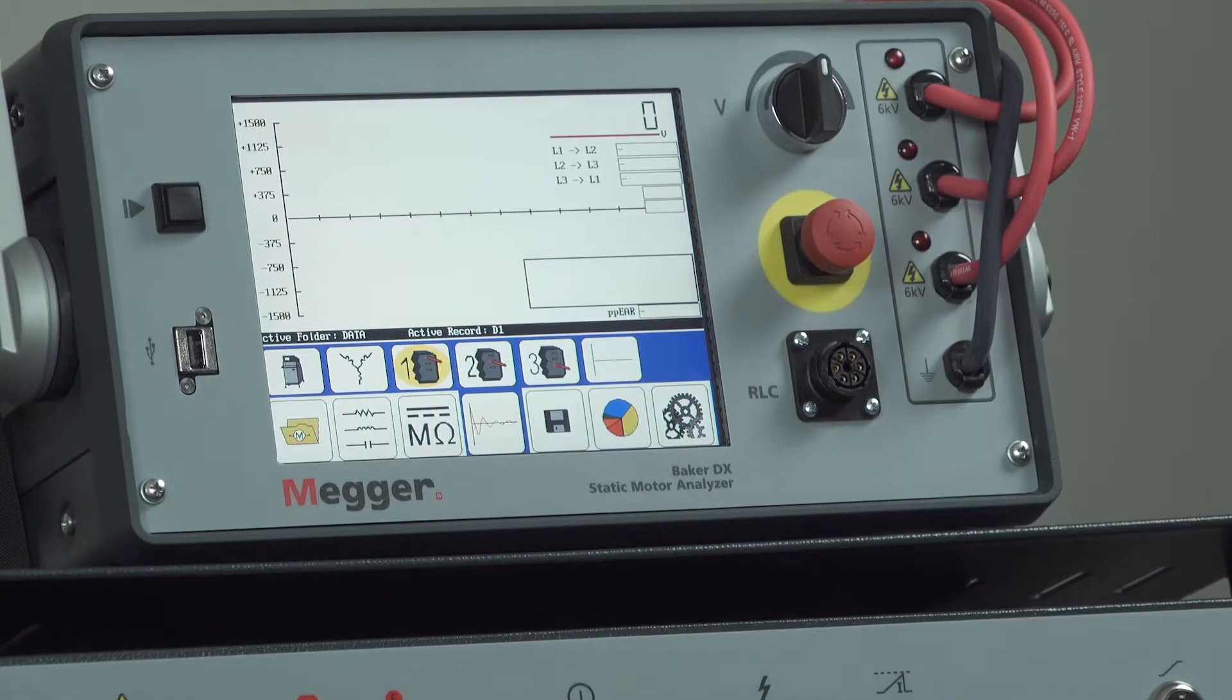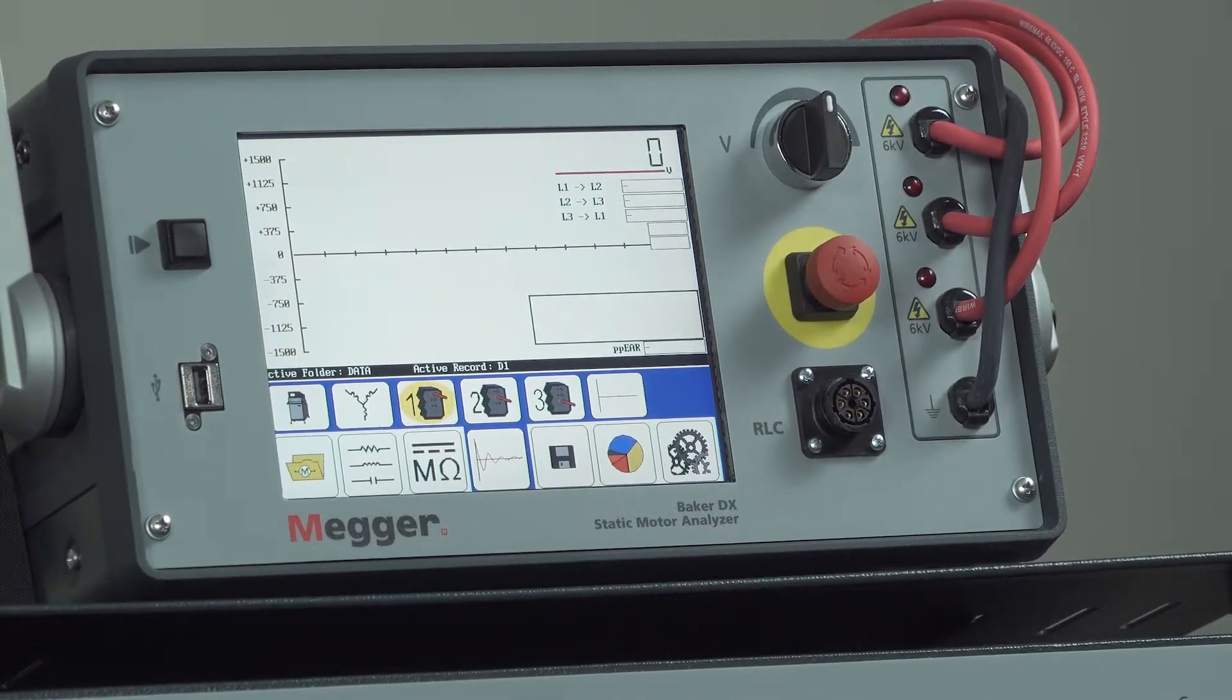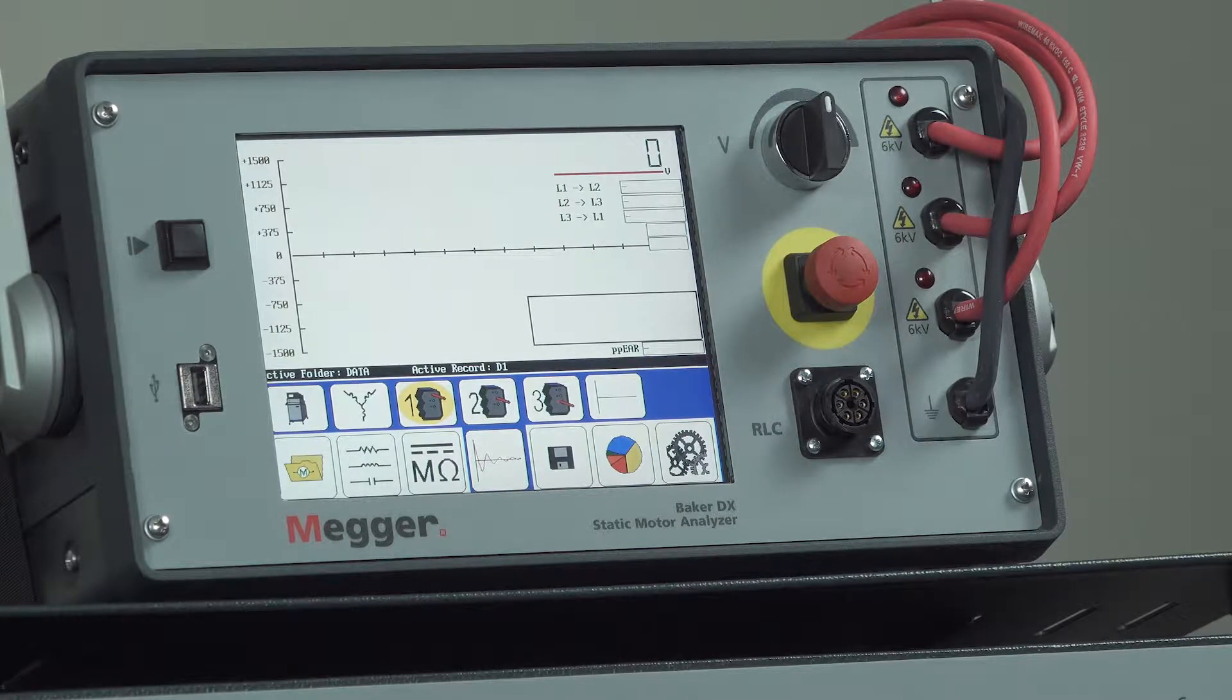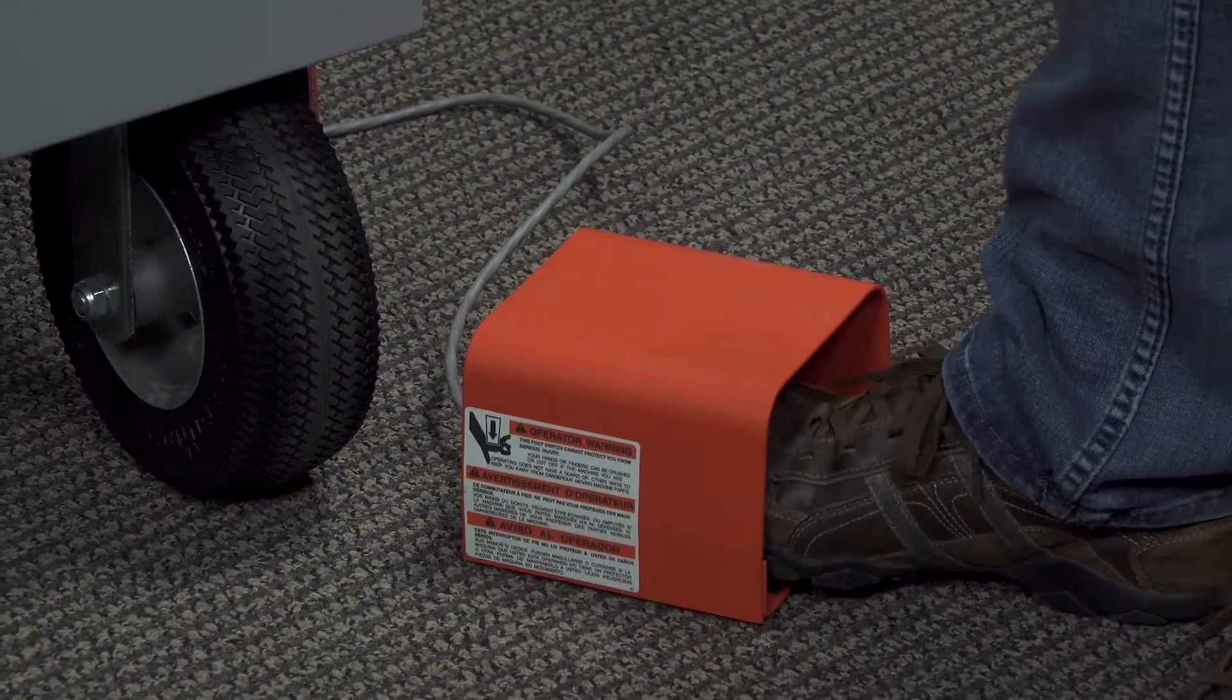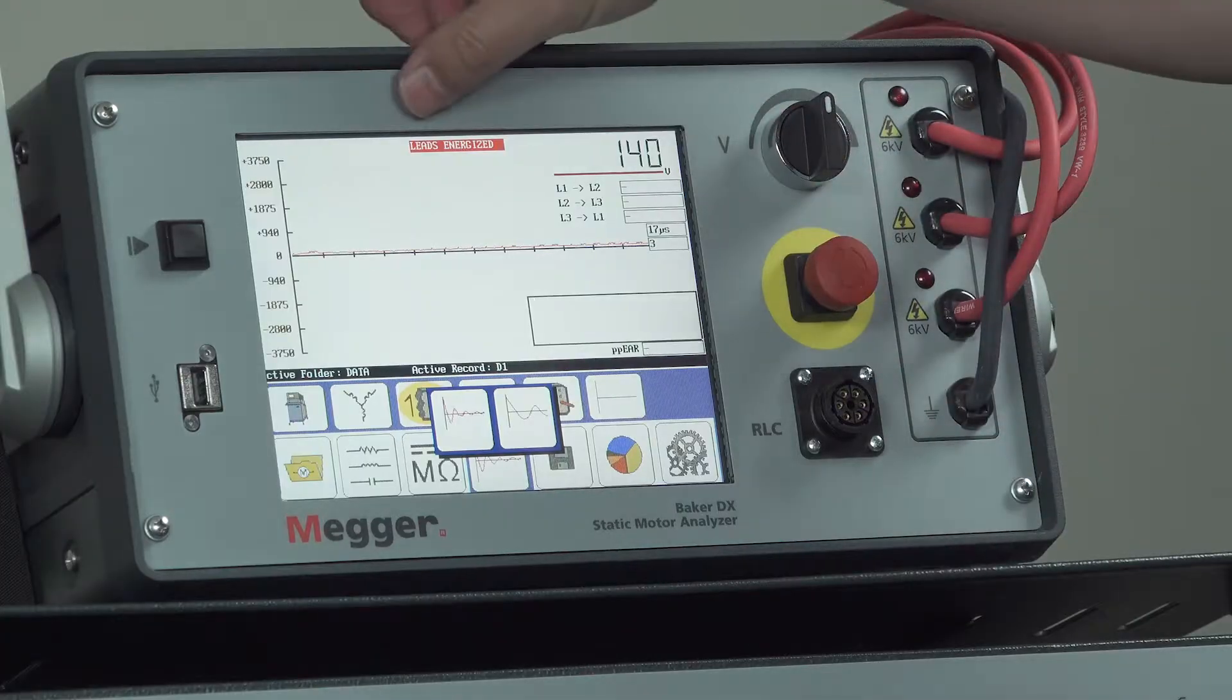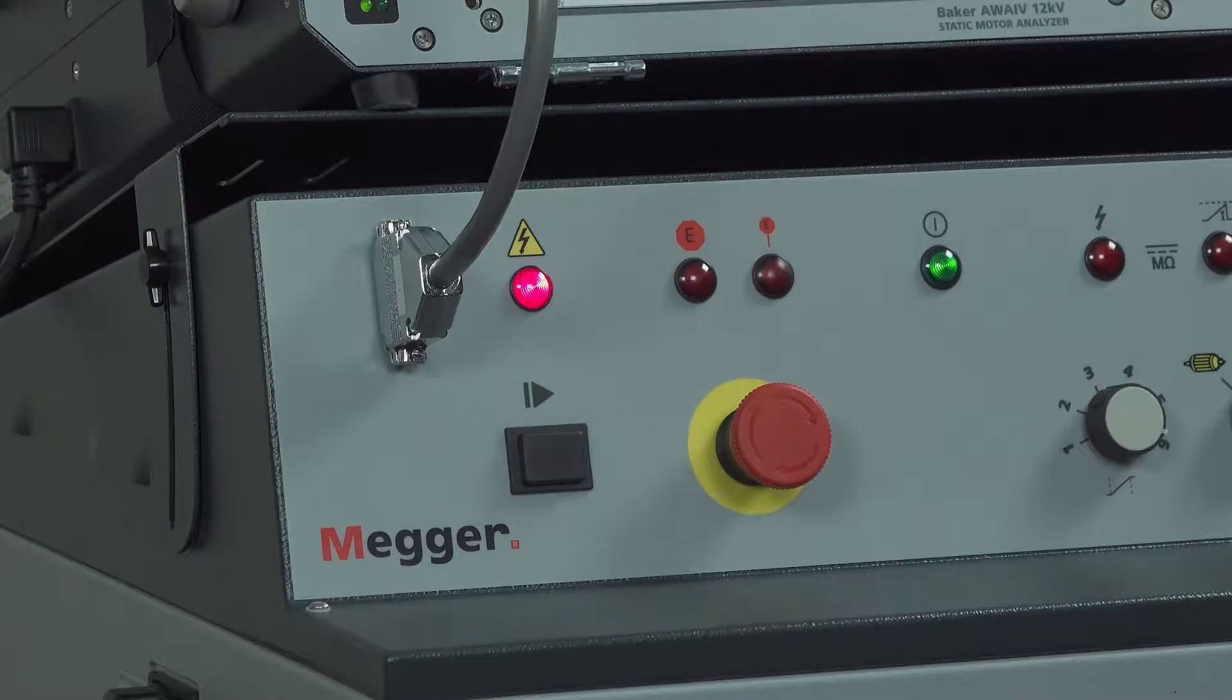To begin testing we need to press the push to test button. Or we can use the optional foot switch which I have connected to the back of the PPX 30A. To initiate the test I'll depress the foot switch. We see the leads energized indicator at the top of the DX screen, and the leads energized LED is illuminated on the power pack.